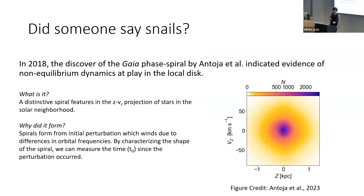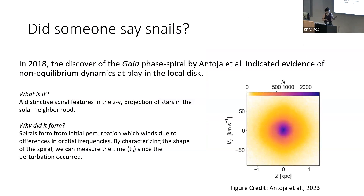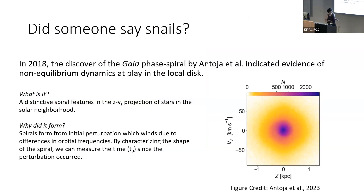So what type of perturbations am I talking about? Specifically, I'm talking about the Gaia phase spiral. This is a local perturbation that was discovered in Gaia data in 2018, and it indicated evidence of non-equilibrium dynamics at play in the local disk. It is this spiral feature in Z — that's position up and down from the plane of the disk — and V_Z, that's velocity up and down from the plane of the disk, and it forms this spiral structure.